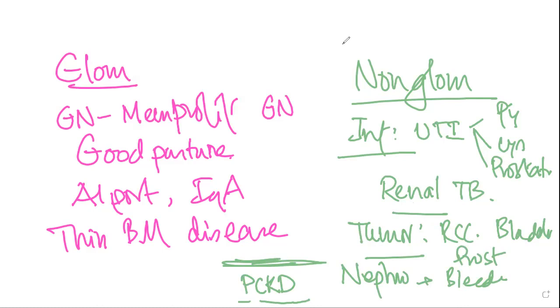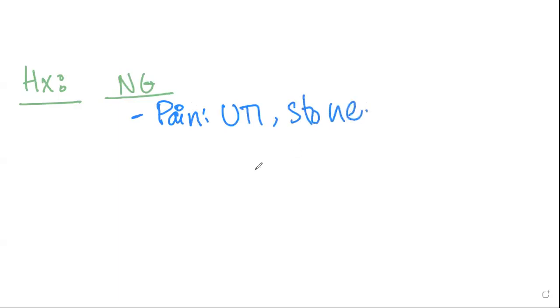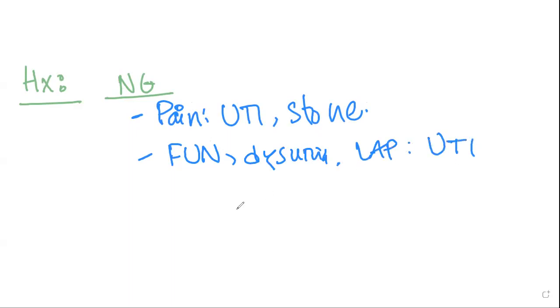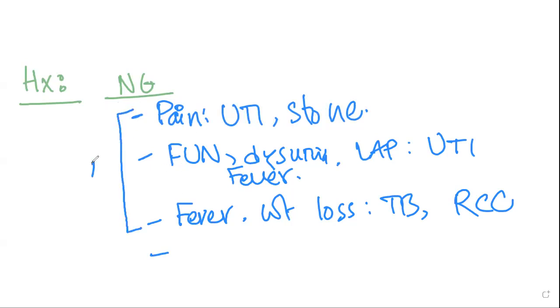Now let's take a history. From a non-glomerular perspective, first ask about pain. If there is pain with hematuria, think about UTI or stone. If the patient has frequency, urgency, nocturia, dysuria, or lower abdominal pain, that goes in favor of urinary tract infection. If there is low-grade fever with weight loss, think about TB or renal cell carcinoma.